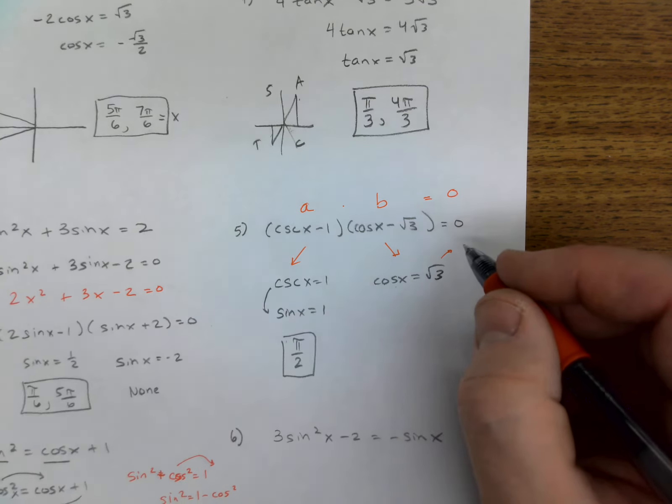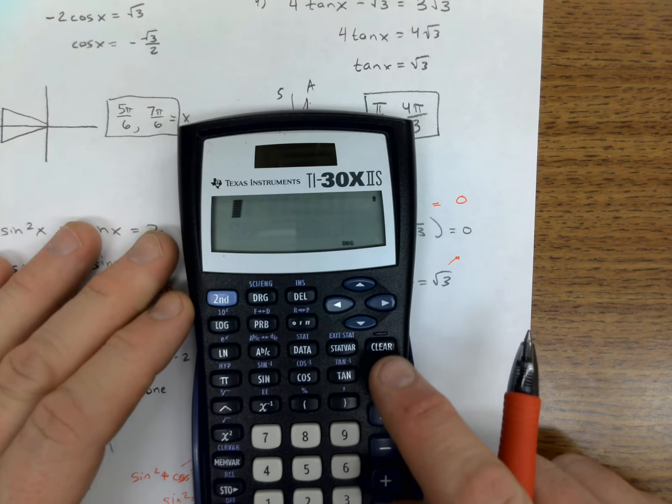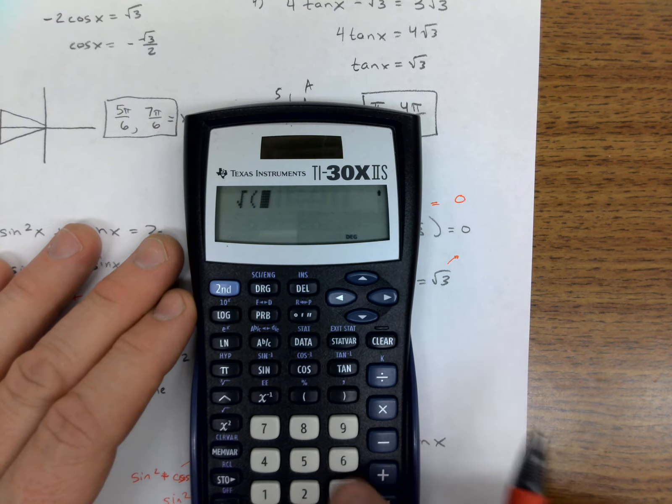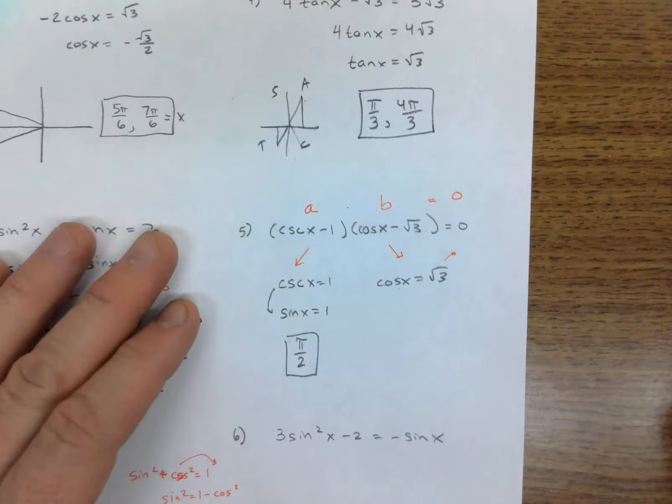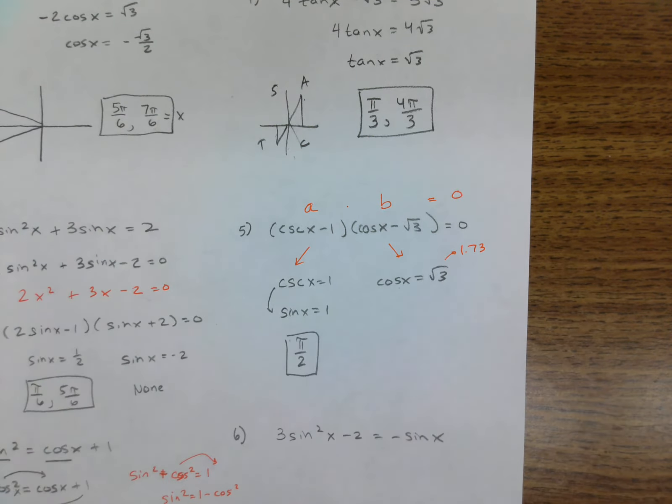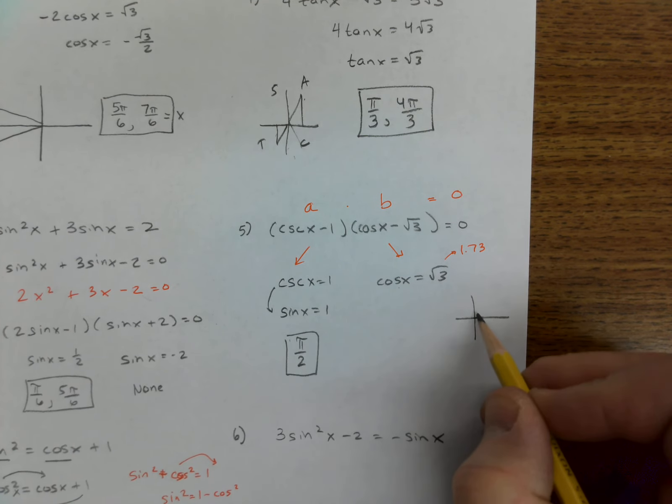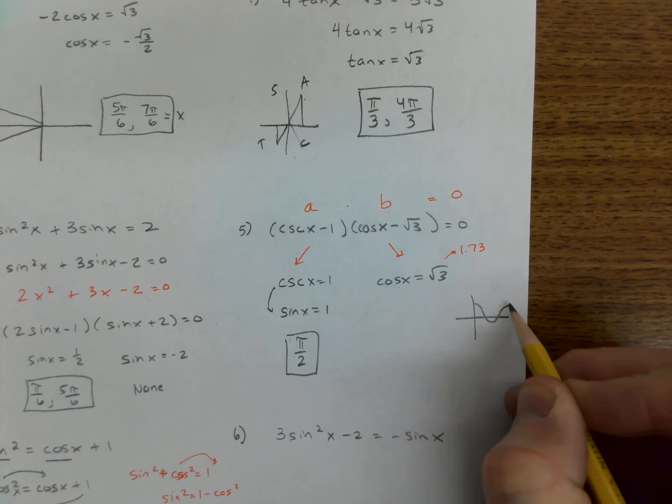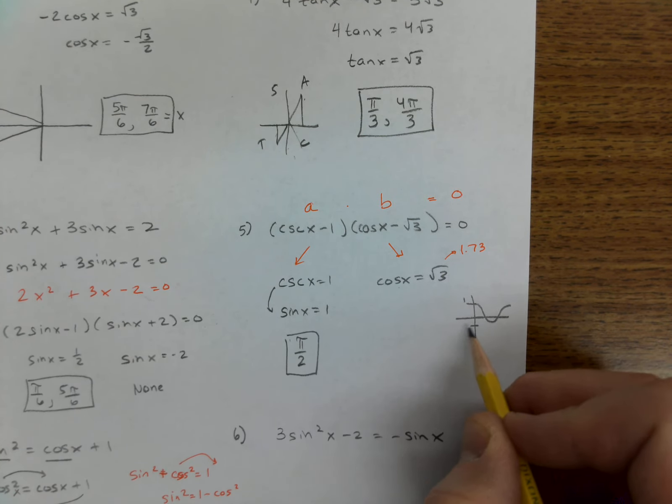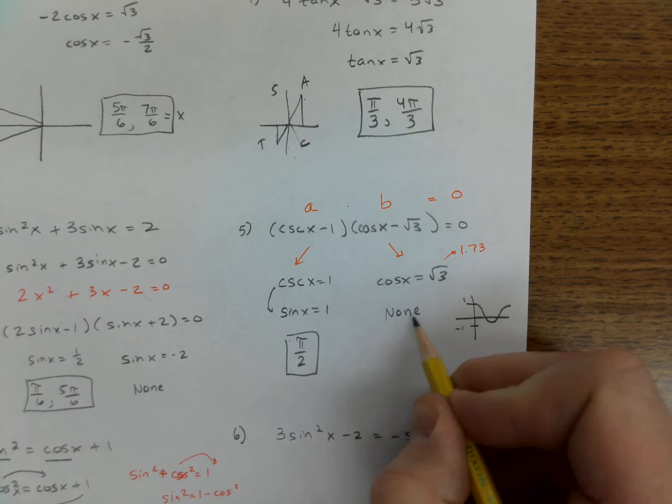If I use the calculator, the square root of three, let's see here, let's see what the square root of three is—about 1.7. So just mentally we know that this is larger than one, and cosine does not go above one. If you remember the graph of cosine, the graph of cosine stayed between one and negative one down there. There is no solution on this part of it.